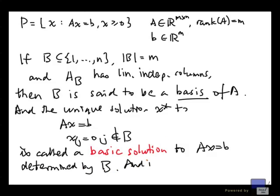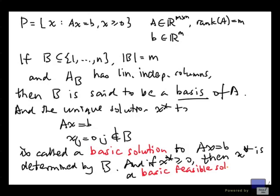And if it happens that x star is non-negative, then x star is a basic feasible solution to this system Ax equal to b, x greater than or equal to 0.